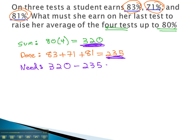320 minus the 235 tells us how many more points she needs on that last test in order to achieve that average she's shooting for. She needs an 85%. That would make all four tests average if they were the same to 80%.